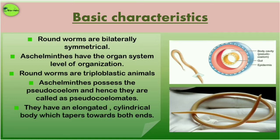They possess a pseudocoelom — not a true coelom. Their body cavity is present but it is not lined by mesoderm. Instead, the mesoderm is present as scattered pouches in between the ectoderm and endoderm. Hence they are called pseudocoelomates.